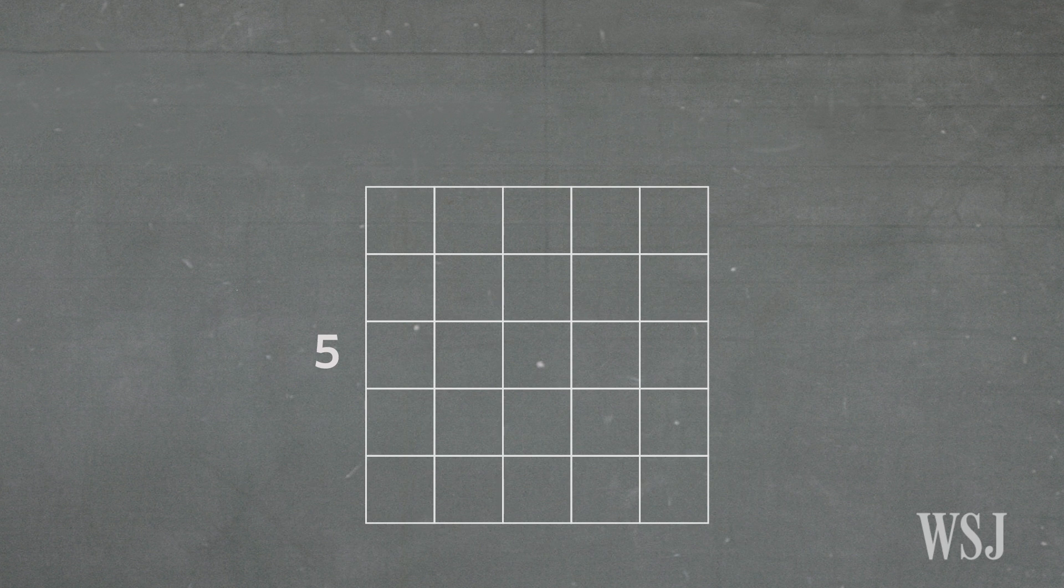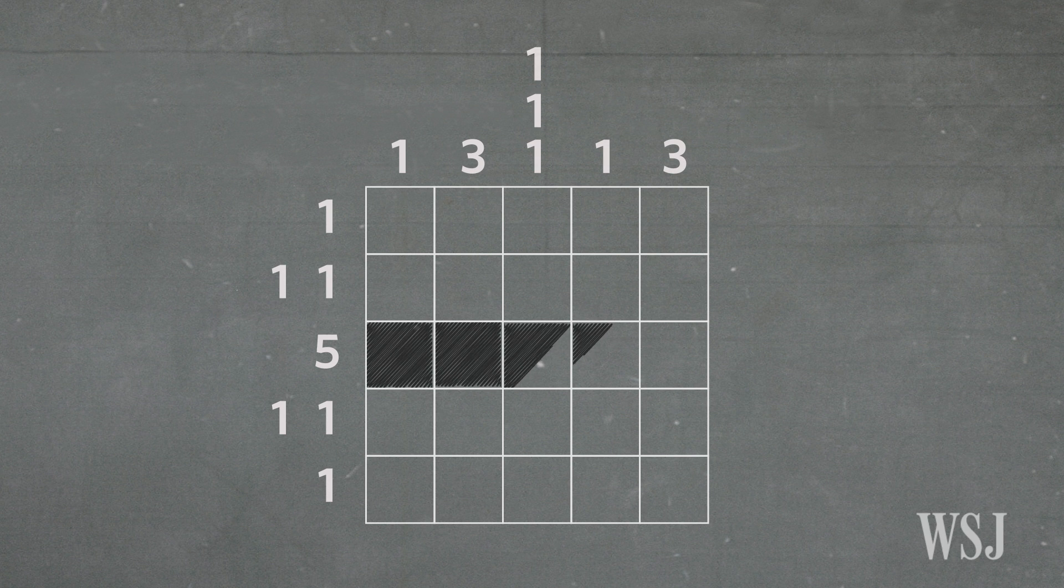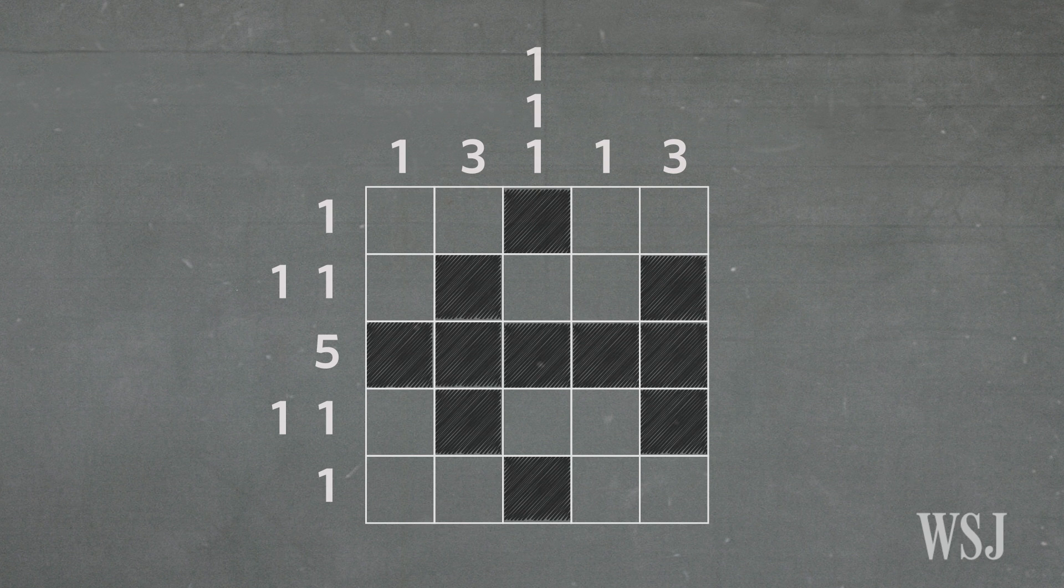One of the favorite pastimes of the Varsity Math team is pixel puzzlers. In this type of puzzle, every row and column of a square grid is labeled with a sequence of numbers indicating the lengths of all of the separate runs of adjacent black pixels to be filled in within that row or column. The goal is to deduce which pixels are black and recreate the unknown picture.